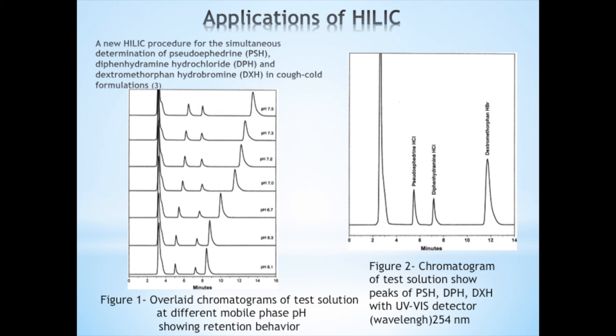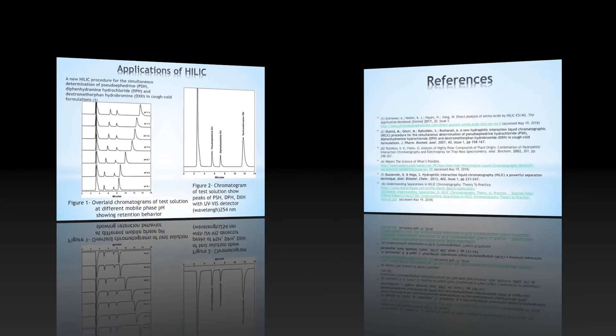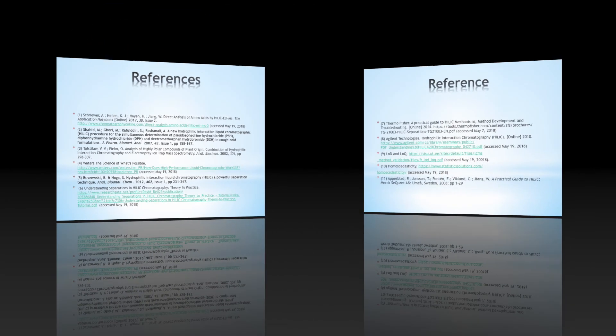Most HILIC applications are found in the pharmaceutical and clinical markets. In this research paper, a new HILIC method has been developed for the simultaneous determination of pseudoephedrine, diphenhydramine, and dextromethorphan in cough-cold formulations. Detection is carried out using a variable wavelength UV-Vis detector at 254 nm for pseudoephedrine and diphenhydramine and at 280 nm for dextromethorphan shown in Figure 2. Figure 1 shows the effect of pH on retention behavior. The test method was validated to include requirements of International Conference of Harmonization guidelines. Parameters like specificity, linearity, accuracy, precision, range, robustness, and system suitability were examined and found to be acceptable.